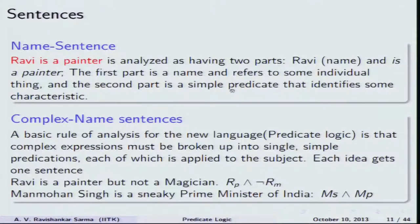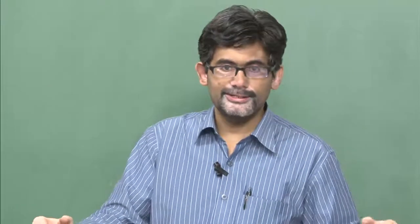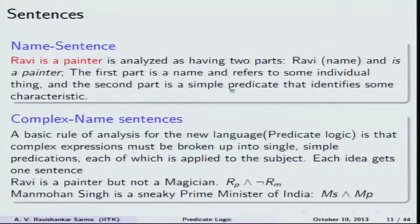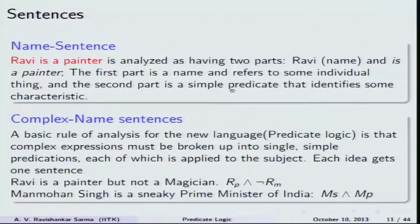This sentence is represented as: if 'being a painter' is taken as capital P and 'Ravi' is considered as constant r, then the sentence is represented as P subscript r. Complex name sentences require that complex expressions be broken up into single and simple predications, each of which is applied to the subject. Each idea gets one kind of sentence — if you have a complex sentence, you break it into simple sentences, and each kind of property is attributed to the subject.